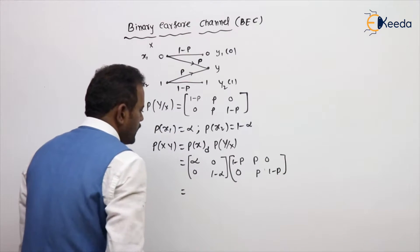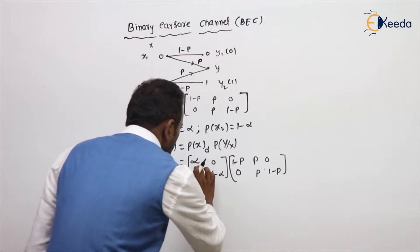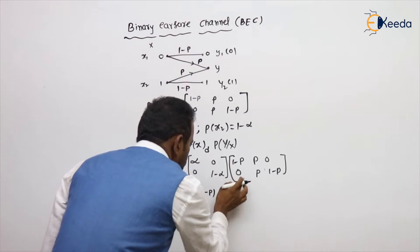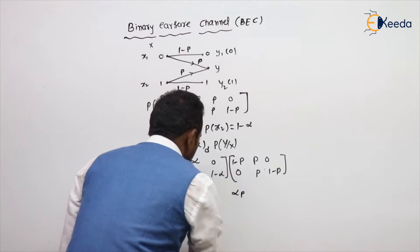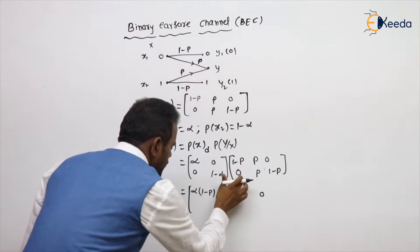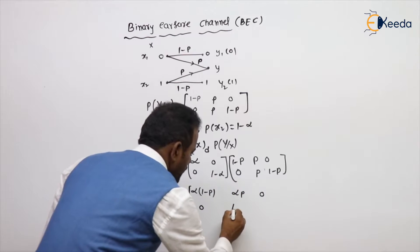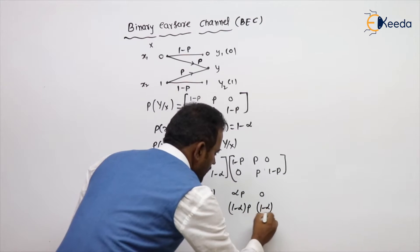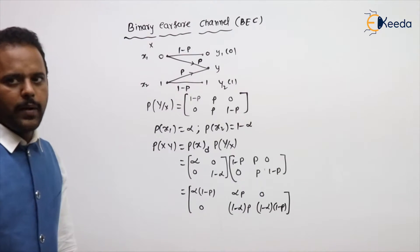Multiplying the 2×2 diagonal matrix by the 2×3 matrix gives a 2×3 joint probability matrix. The result is: row 1 — alpha(1−p), alpha·p, 0; row 2 — 0, (1−alpha)·p, (1−alpha)(1−p). That is the joint probability matrix.